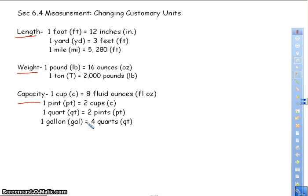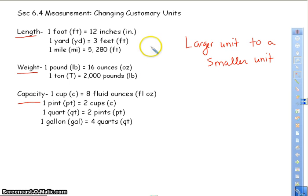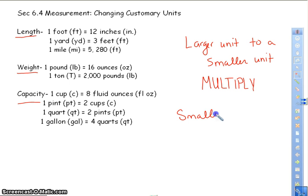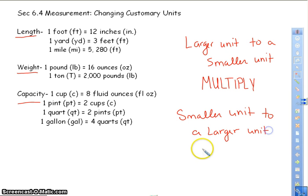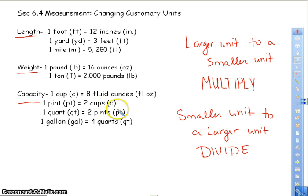The reason we want to know what unit is bigger is because when we do our conversion, when you go from a larger unit to a smaller unit, you are going to multiply. When you go from a smaller unit to a larger unit, you are going to divide. What you are multiplying and dividing has to do with the conversions. You're going to use these conversions to figure out what you're going to multiply and divide by. Please make sure you write this information down.